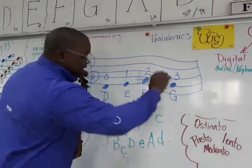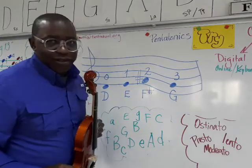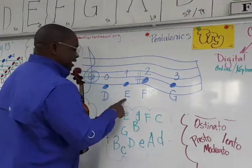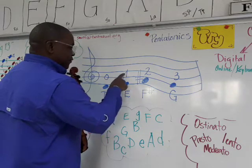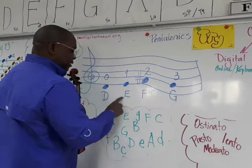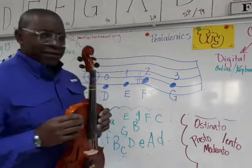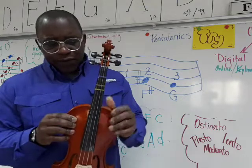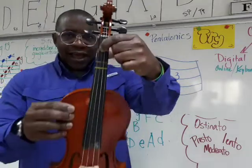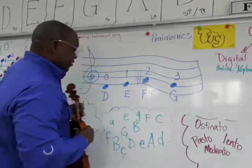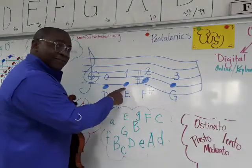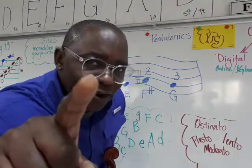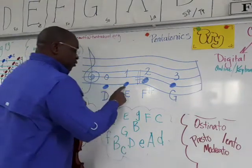Every time we see this note — this pitch right below the bottom line — we know to play D, third string. Please remember that this is D. You can write it down and make your own five lines if you like — it's in the book too. Now, E is first finger on the D string. We put our first finger on the D string and now we're playing the note E — the bottom line.